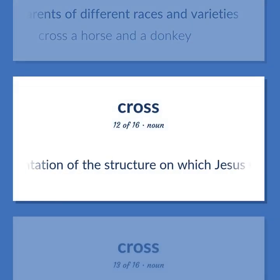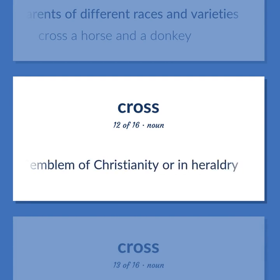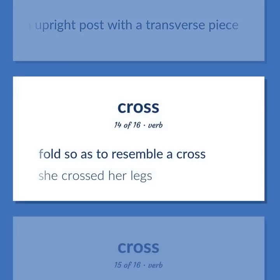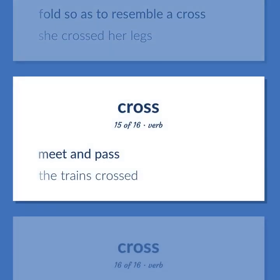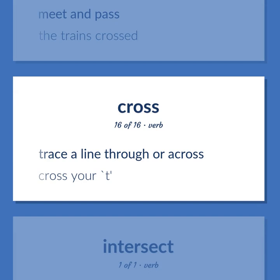A representation of the structure on which Jesus was crucified, used as an emblem of Christianity or in heraldry. A wooden structure consisting of an upright post with a transverse piece. Fold so as to resemble a cross — she crossed her legs. Meet and pass — the trains crossed. Trace a line through or across — cross your T.